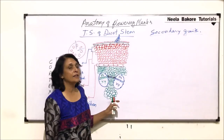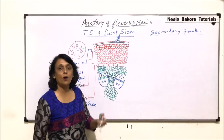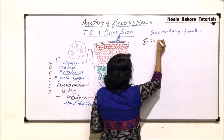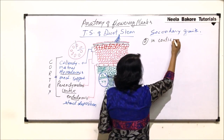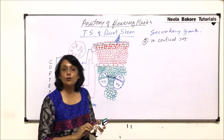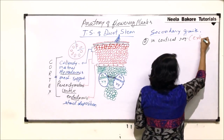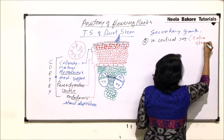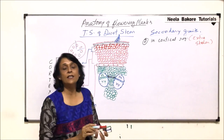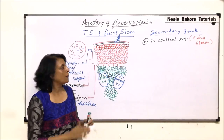In this part, we'll discuss secondary growth taking place in the cortical region. This is secondary growth in the cortical region, also known as extrastellar secondary growth. The reason it is called extrastellar is because it is outside the endodermis.